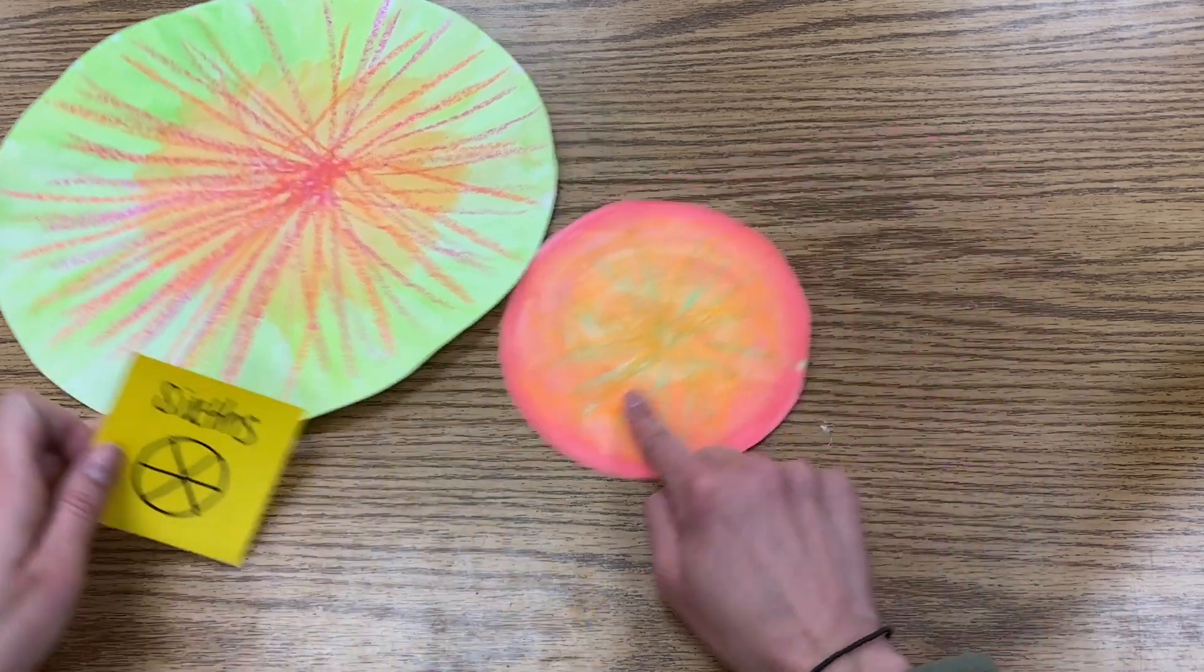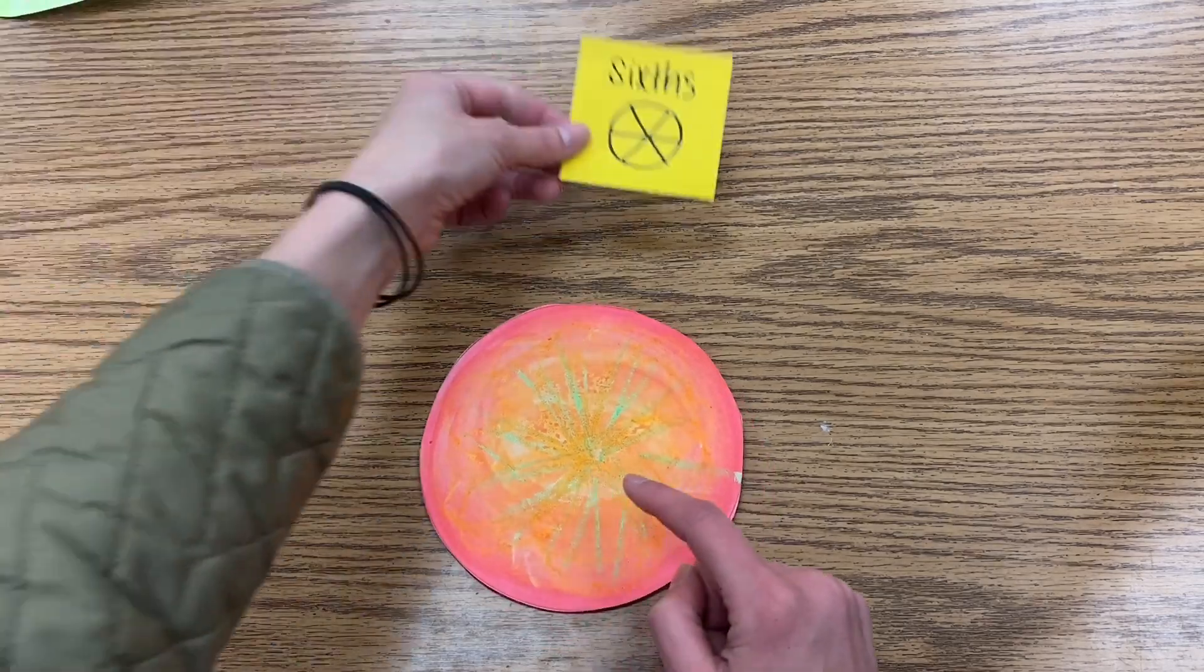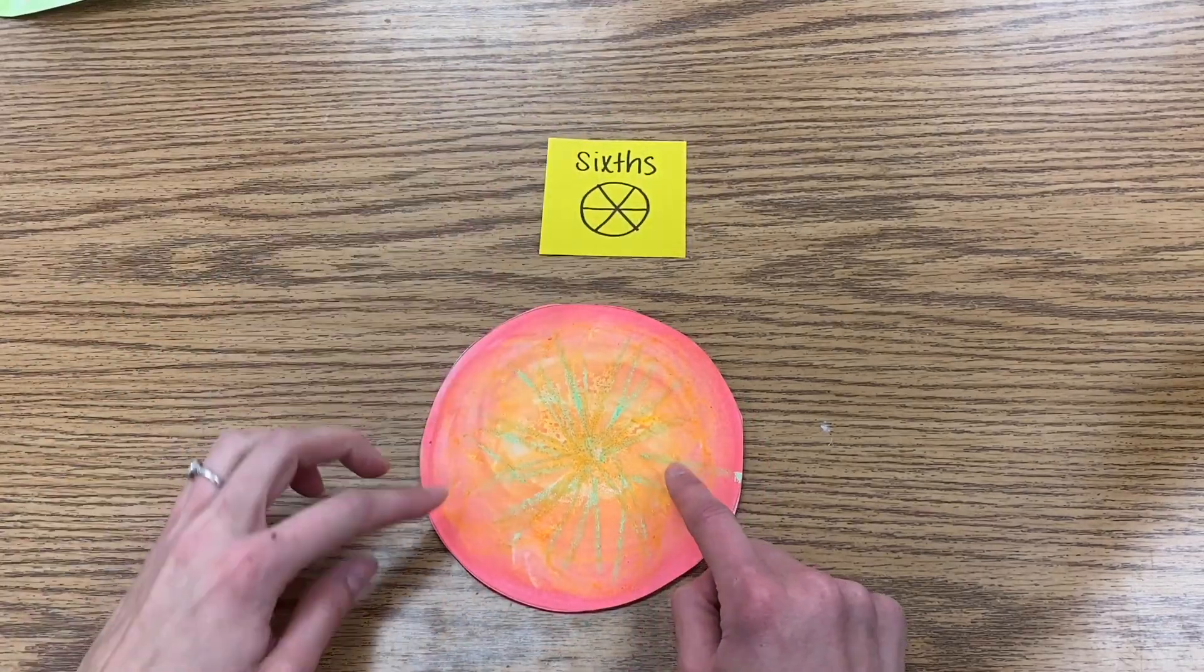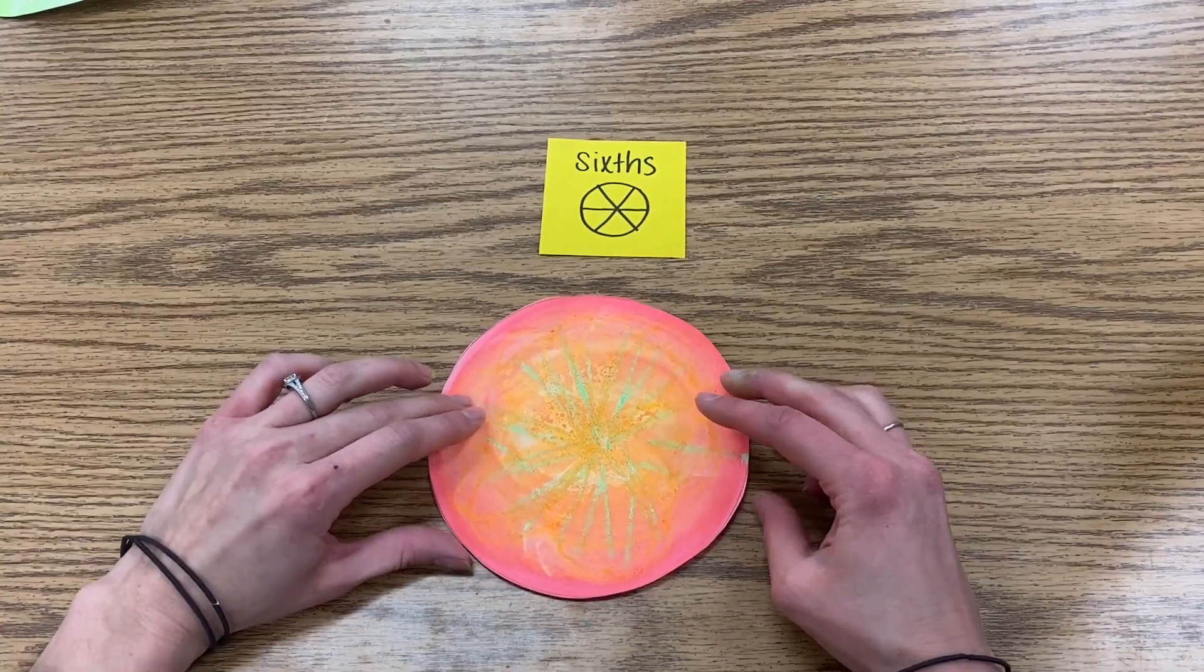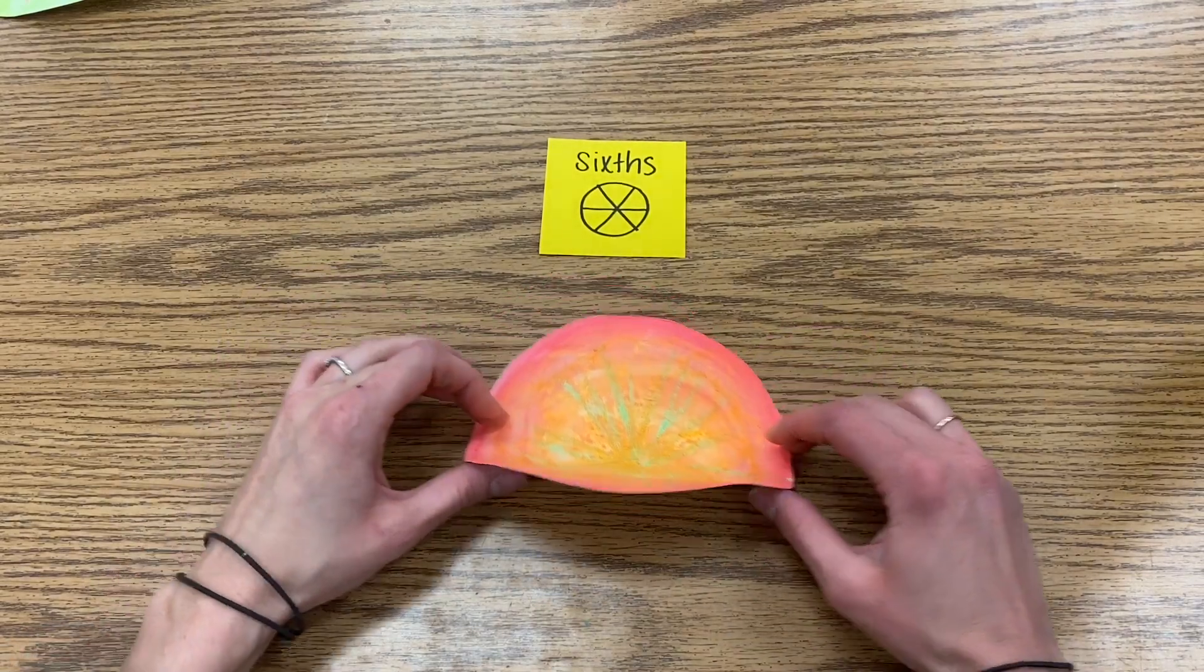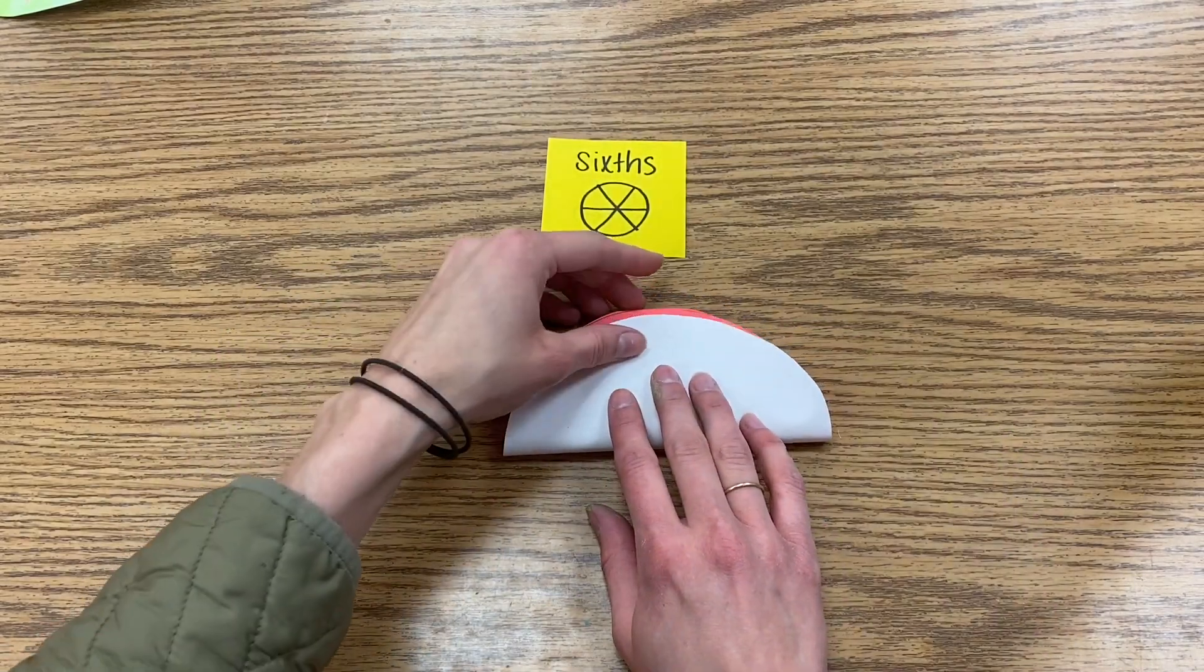With your smaller circle we're going to fold it into sixths. When you fold this you want your color to be on the inside so you should be able to see the white outside.